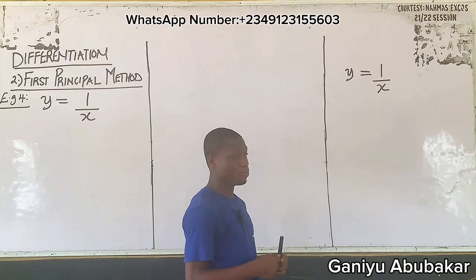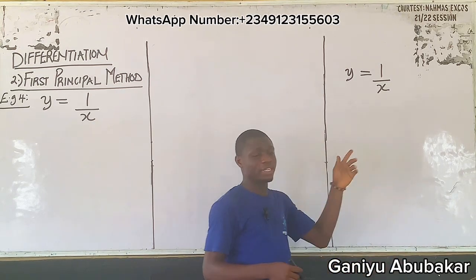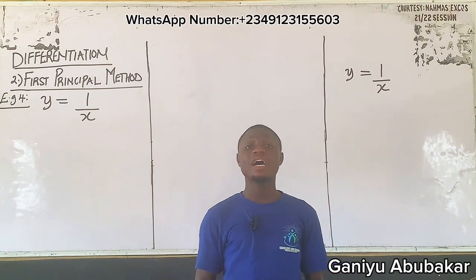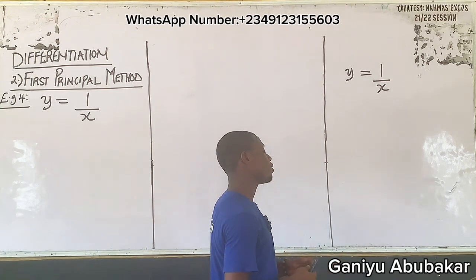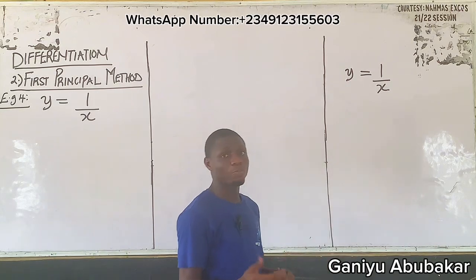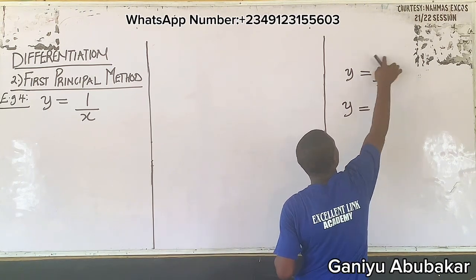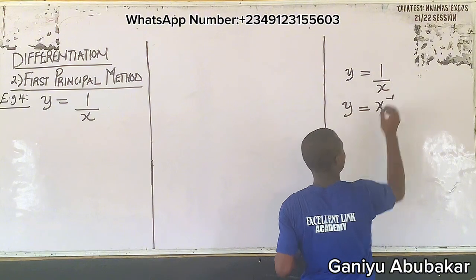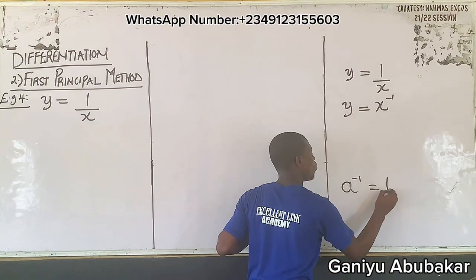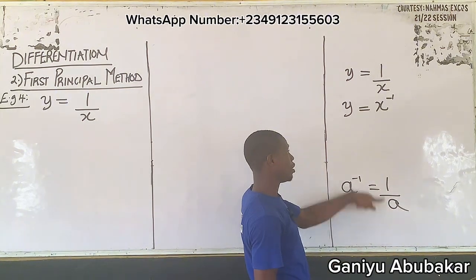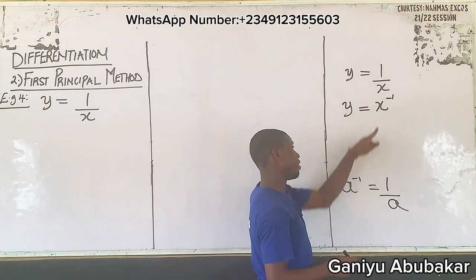Applying the general method concept — multiply by the power and subtract from the power. There's nothing like a visible power here, so I'll express the question in terms of indices. This becomes y is equal to x to the power of minus one. In indices, a to the power of minus one can be expressed as 1 over a. Similarly, 1 over x becomes x to the power of minus one.